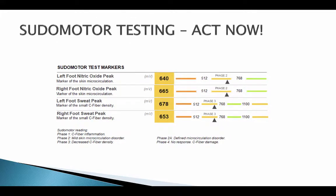Pseudomotor testing can prevent problems from developing. Here we see phase two — mild microcirculation disorder — and phase three — decreased C-fiber density. If a person acts now by reducing risk factors, changing habits, controlling blood sugar, exercising, and increasing circulation to the lower extremity, they can prevent further damage and won't lose the ability to feel and protect themselves.